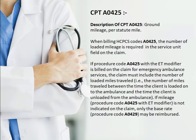For emergency ambulance service, the claim must include the number of loaded miles traveled — that is, the number of miles traveled between the time the patient is loaded onto the ambulance and the time the patient is unloaded from the ambulance. If mileage is not indicated on the claim, only the base rate may be reimbursed. Also, the AT modifier for emergency transport must be included; if you miss it, the insurance company will pay only the base rate.